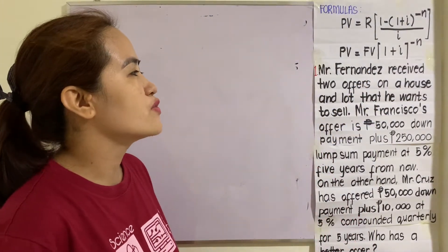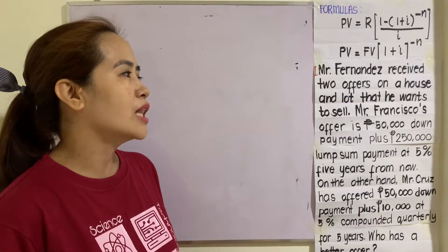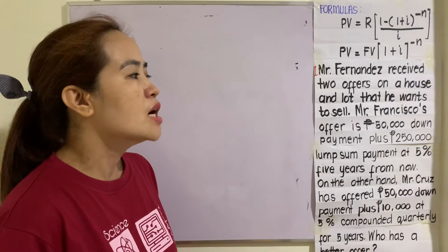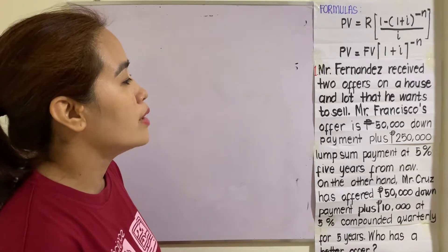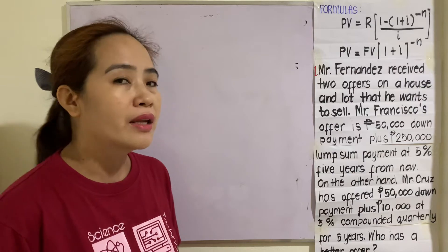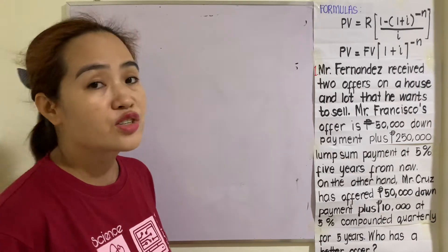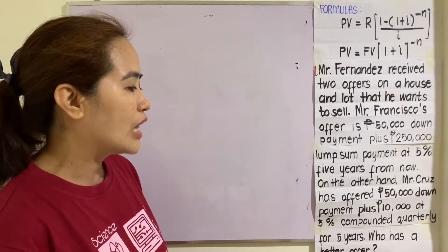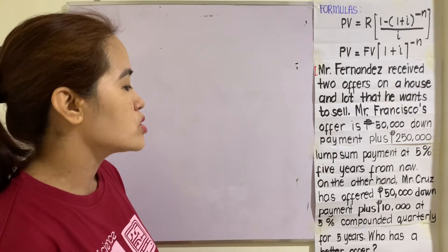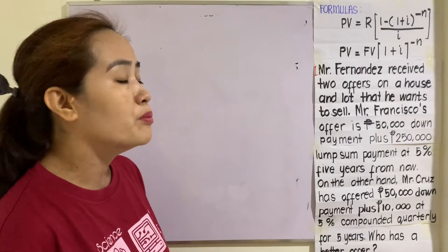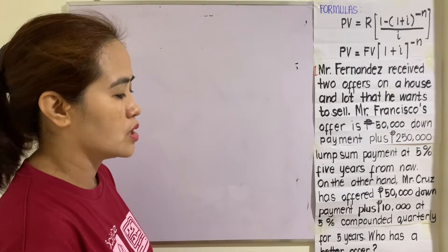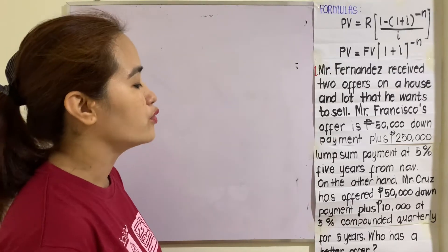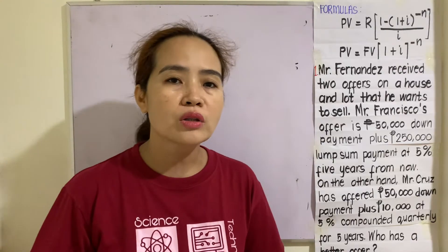Example number one: Mr. Fernandez received two offers on a house and lot that he wants to sell. Mr. Francisco's offer is a 50,000 down payment plus a 250,000 lump sum payment at five percent, five years from now. On the other hand, Mr. Cruz has offered a 50,000 down payment plus 10,000 at five percent compounded quarterly for five years. Who has a better offer?